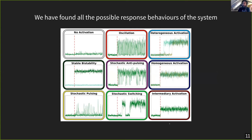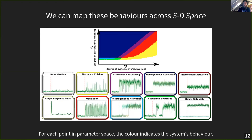What we really want to do is figure out how the parameters of the system determine how it behaves. For every parameter set we get a distinct behavior, and we can map across parameter space where the various behaviors occur. If I fix the four other parameters and vary S — the degree of self-activation — and D — the degree of self-deactivation — I get a 2D parameter map. For each point, with one value of S and one value of D, I simulate the system and get a behavior — for example, stochastic pulsing — and color-code that point accordingly. This lets us really see how behaviors depend on the parameters of the system.